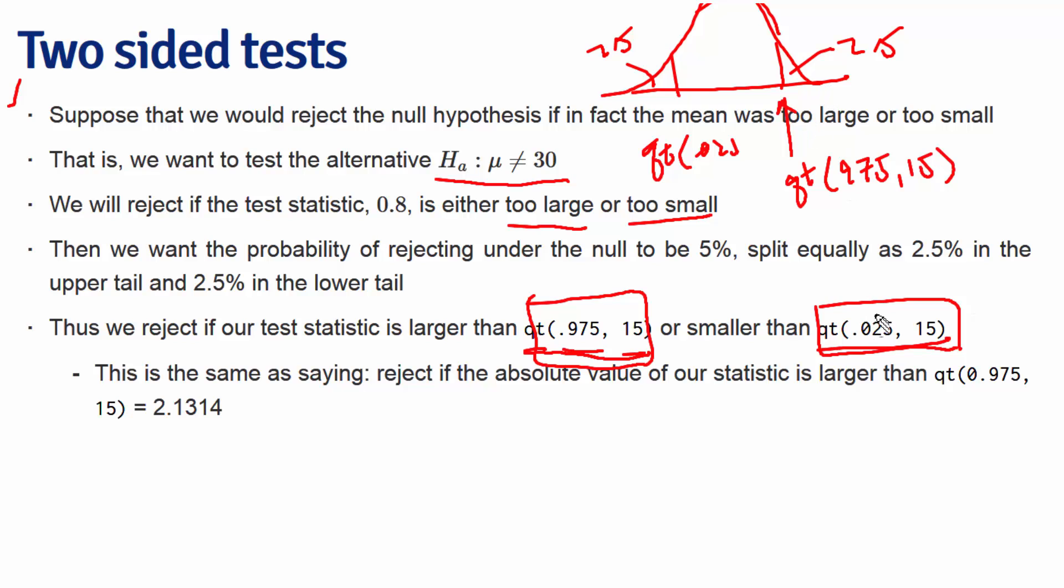However, because the lower quantile is the negative of the positive quantile, we can always say that's the same thing as taking the absolute value of our test statistic and rejecting if it is too large.